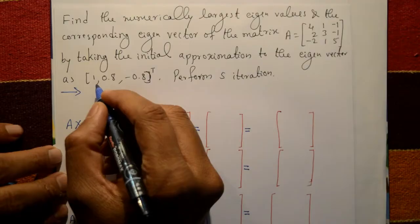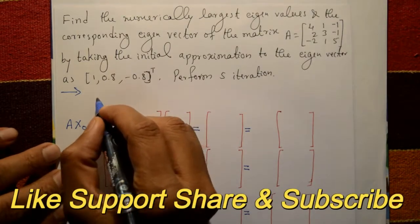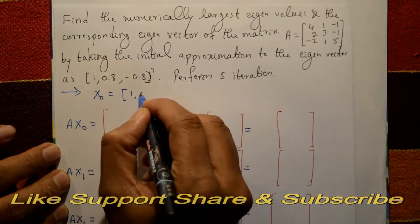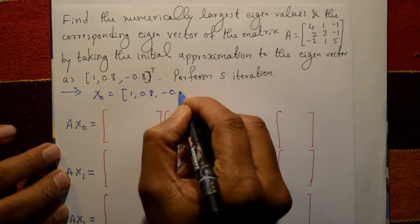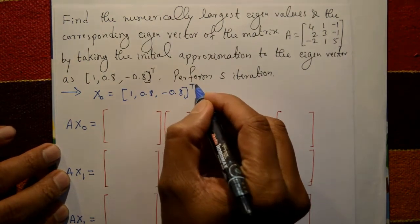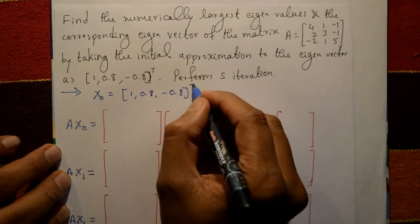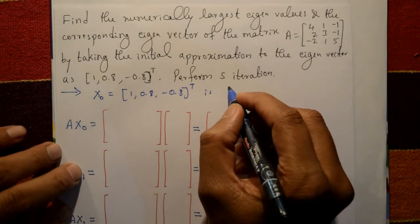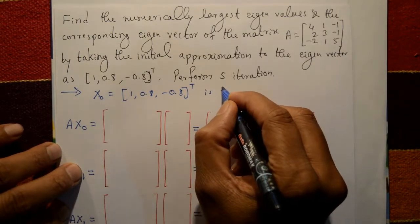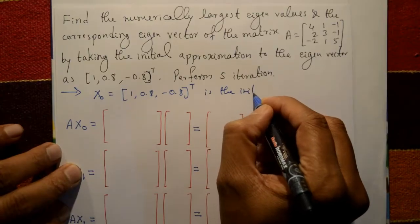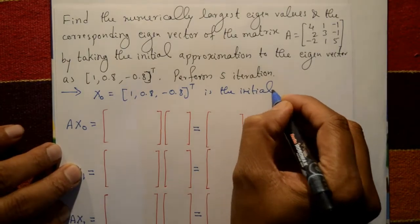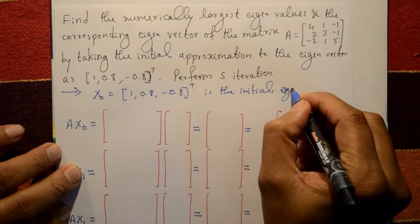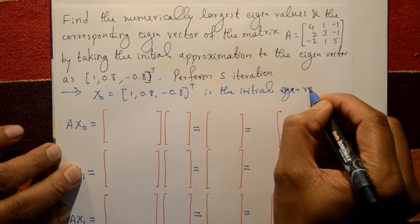Solution: x0 is given as [1, 0.8, -0.8]ᵀ, which is a column matrix. This is the initial eigenvector.